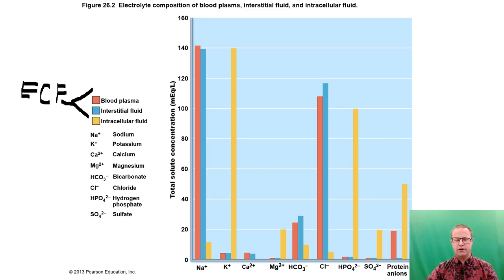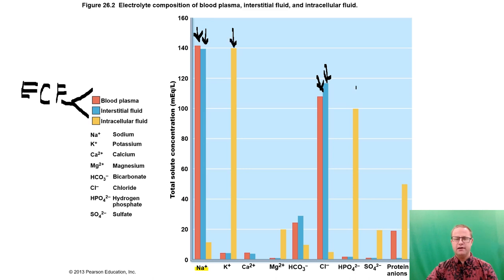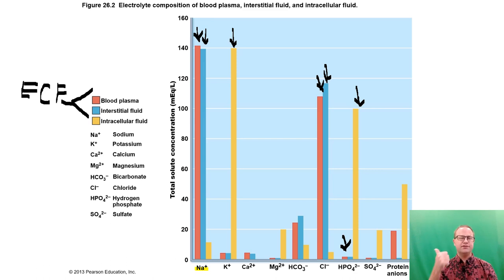There's a lot of sodium in blood plasma and interstitial fluid — they're very similar. There's also a lot of chloride in both. But potassium is hardly present in blood or interstitial fluid, while there's a lot inside the cells. Same with phosphate — a lot inside the cells, not much in extracellular fluids. The bottom line: the two extracellular fluids contain lots of sodium and chloride, while intracellular fluid contains primarily potassium and phosphate ions.